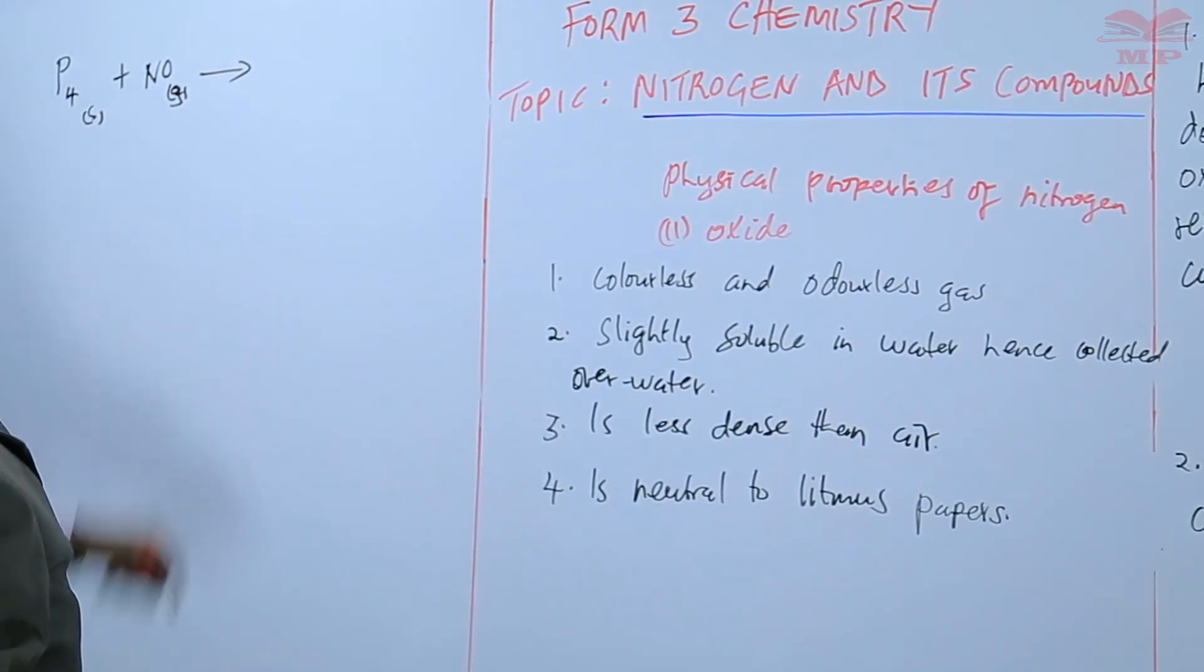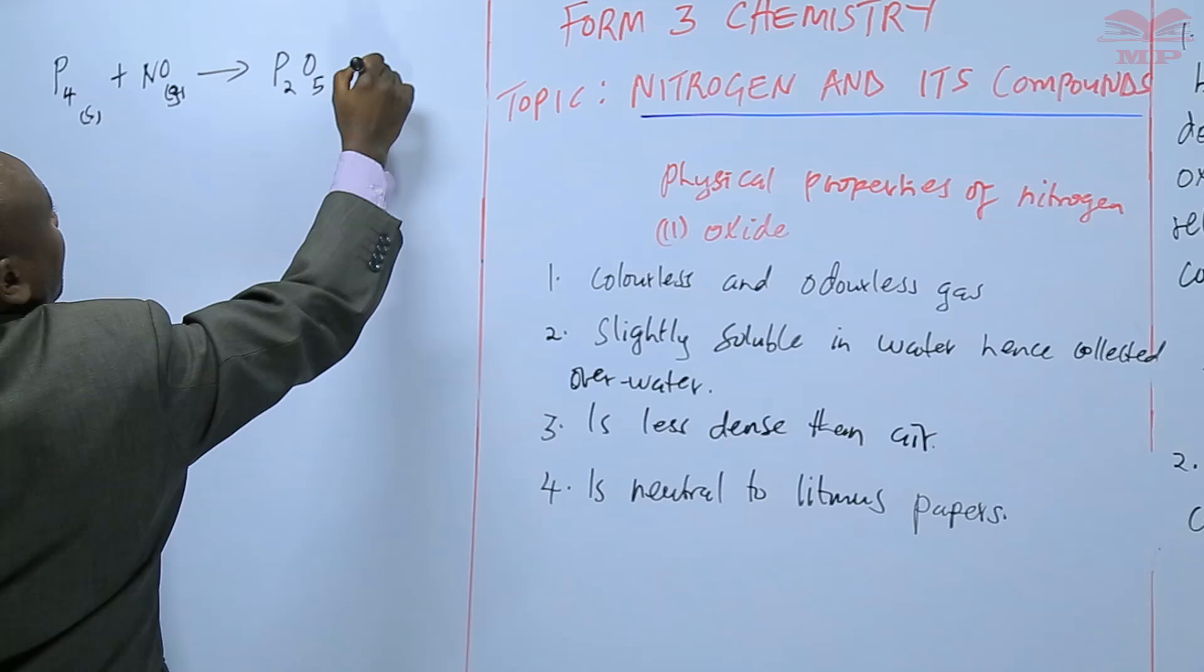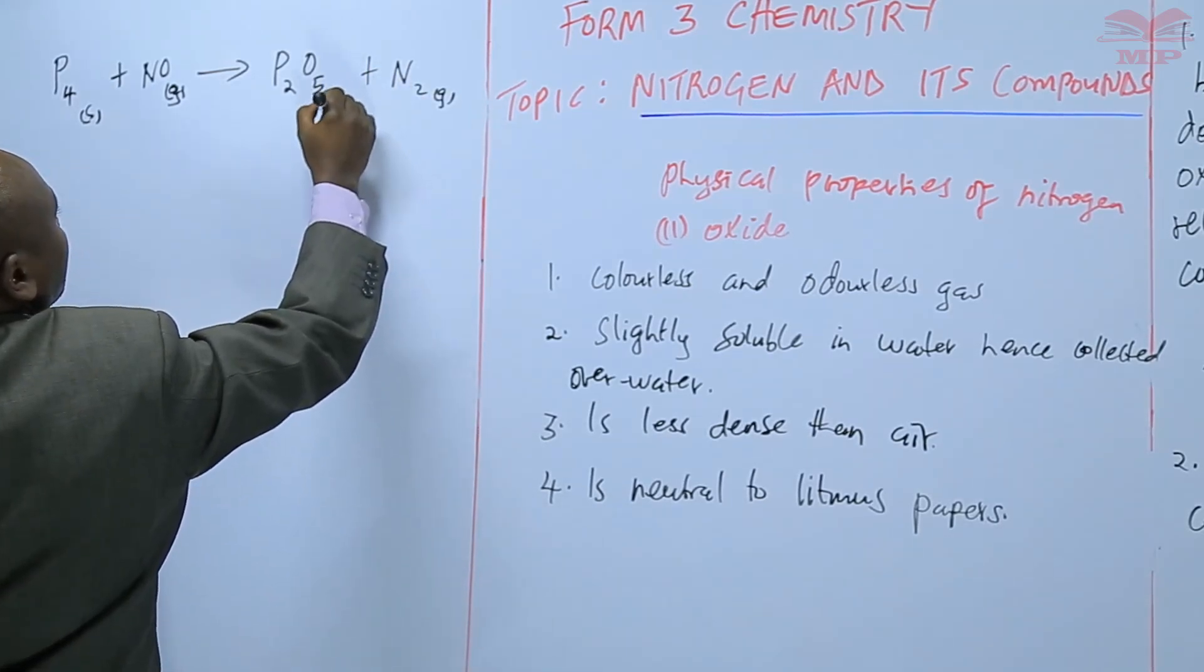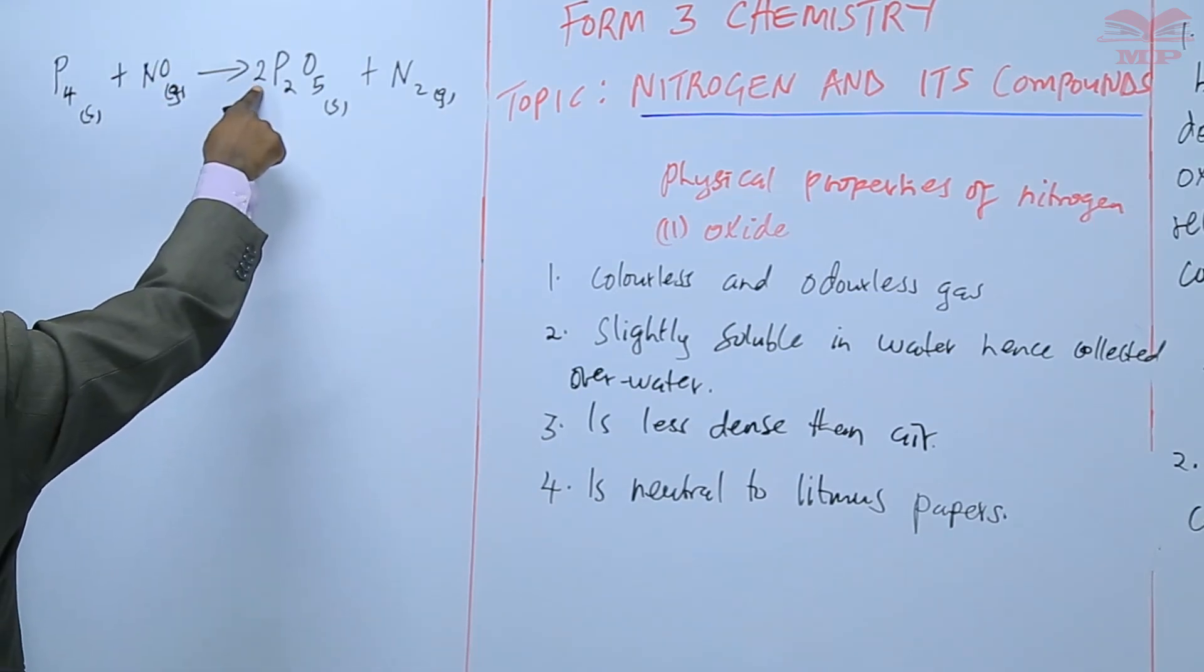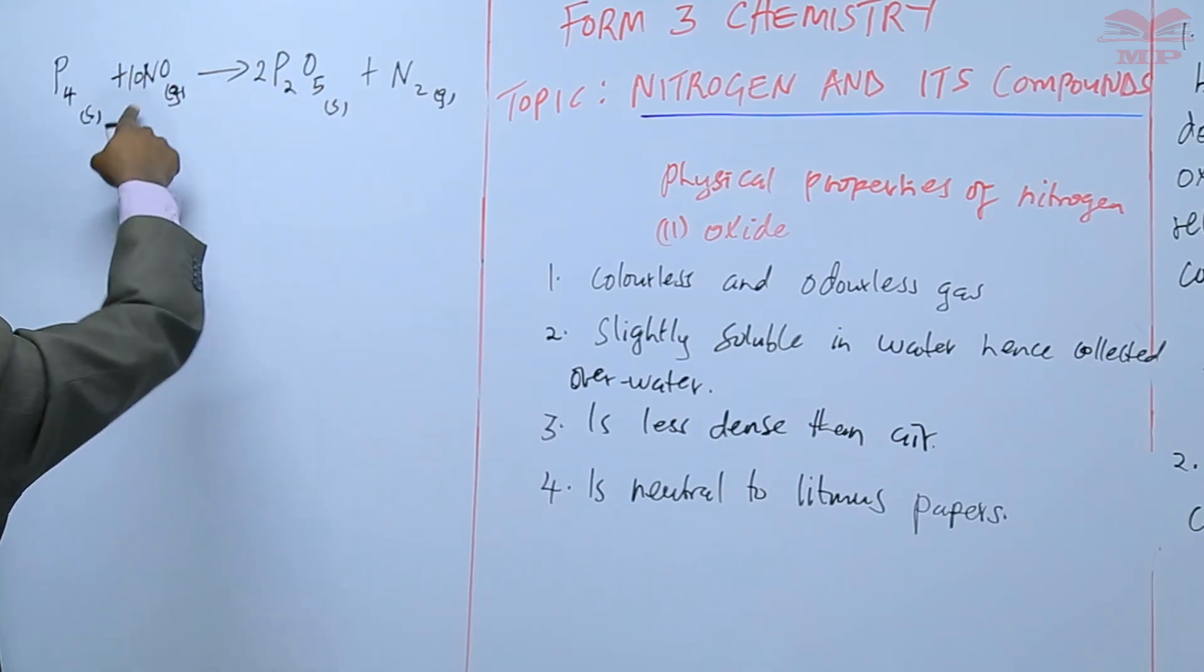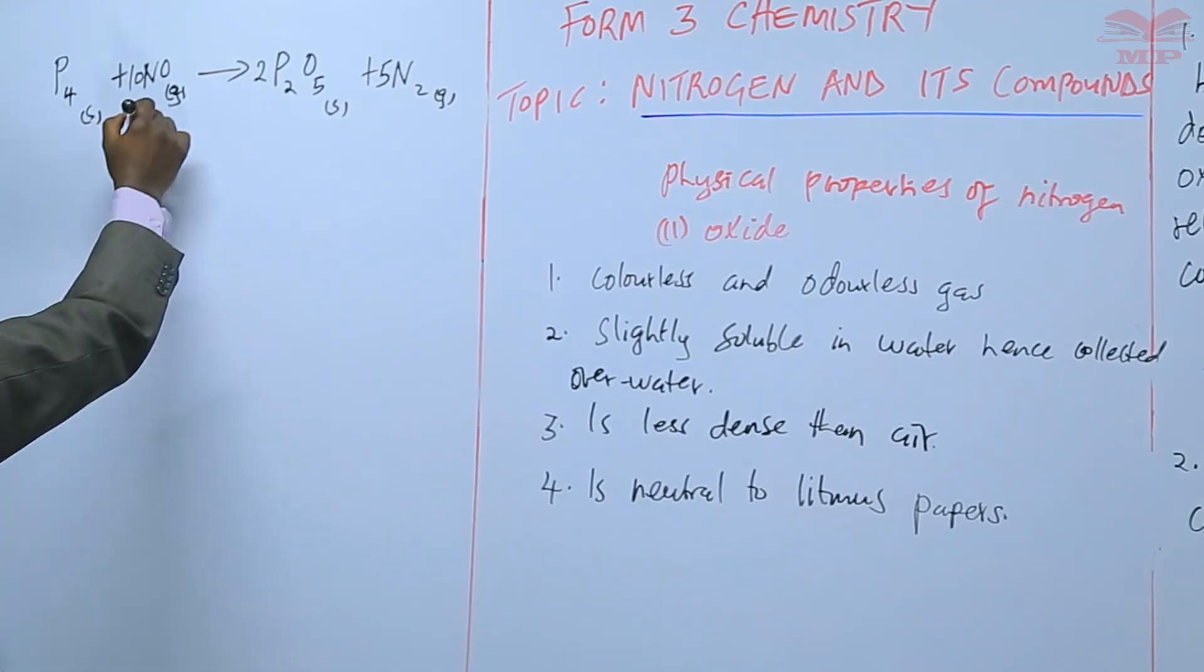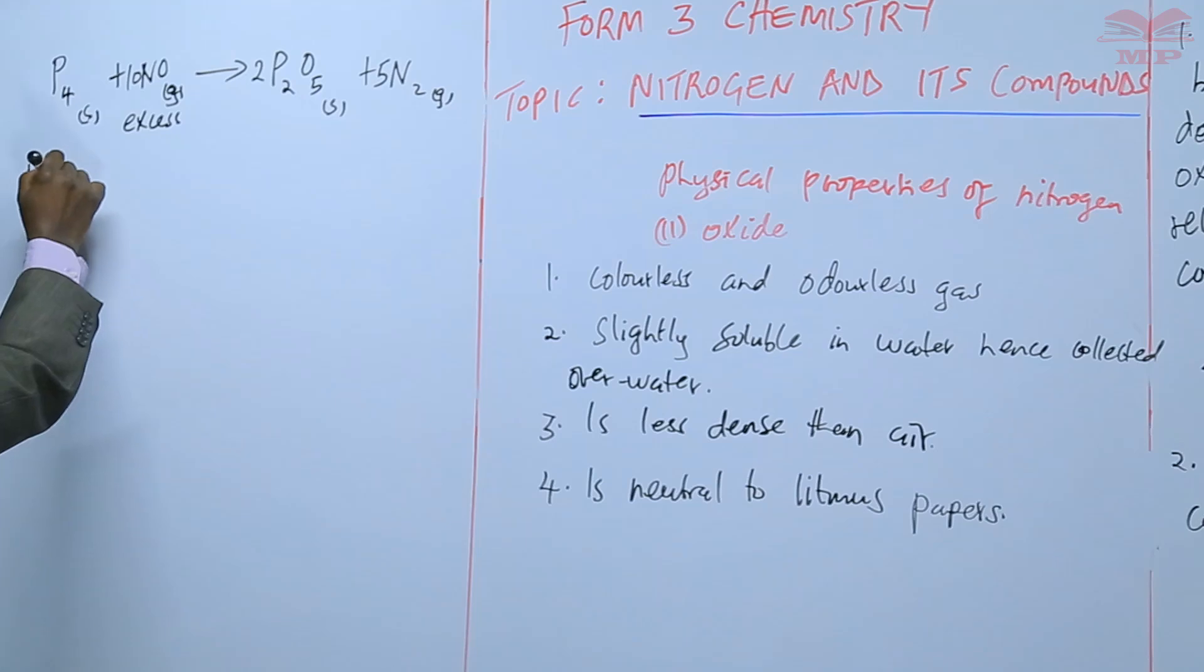Balance the phosphorus, the oxygen, they are 10, and then the nitrogen are 5. This is where there is excess of nitrogen 2 oxide.